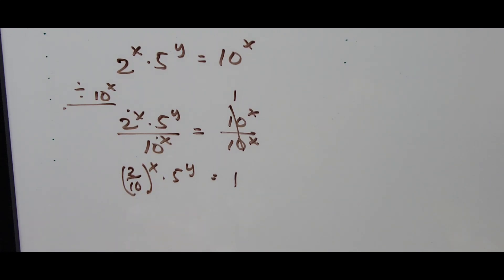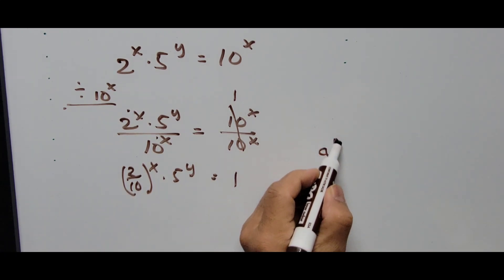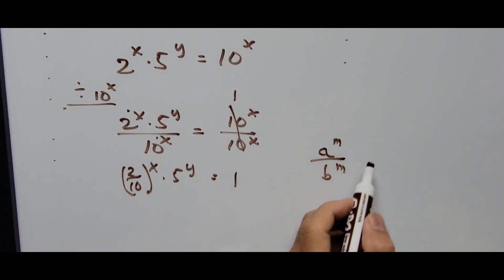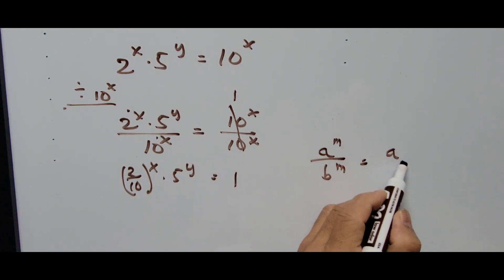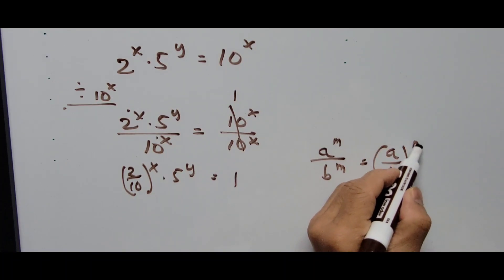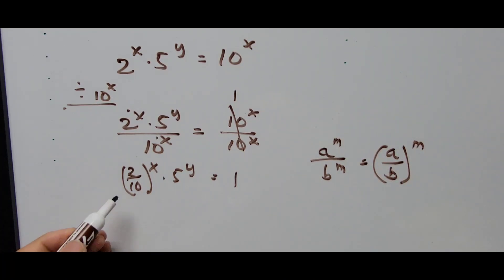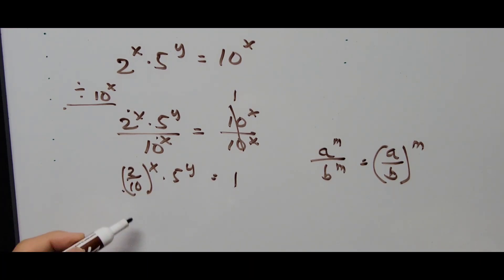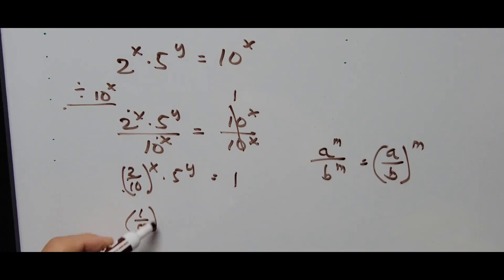Here we use the exponent formula: a^m divided by b^m equals (a/b)^m. That is what we just applied. Simplifying, 2 divided by 10 is 1/5, so this becomes (1/5) to the power of x times 5 to the power of y equals 1.